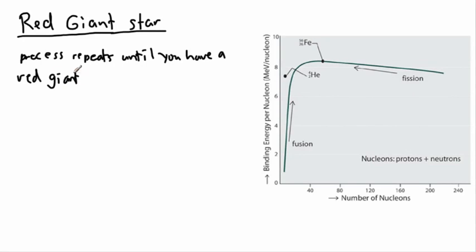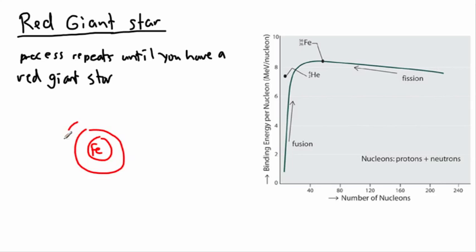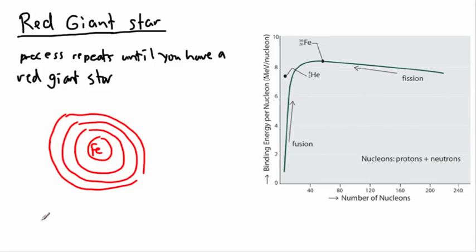Not all stars will end up making such a big red giant, but many will. At the center of the red giant star you'll have iron, plus other layers around it. But the key point is: it can't fuse iron anymore. It turns out it can't fuse iron into anything else.